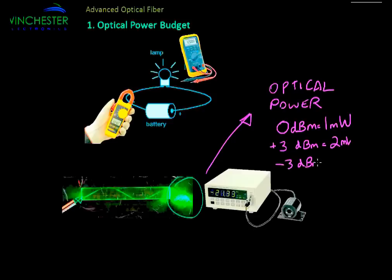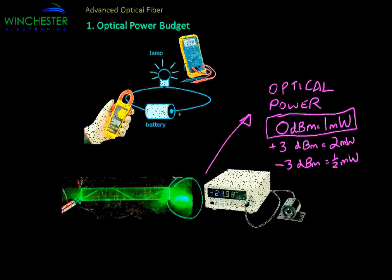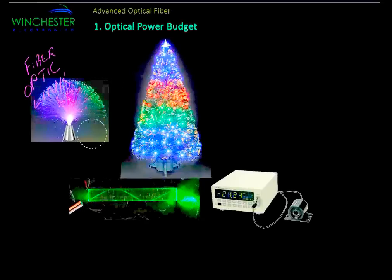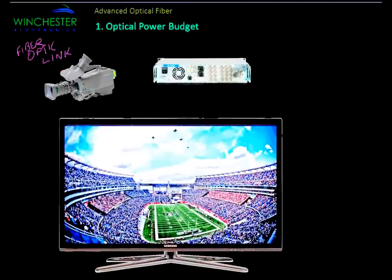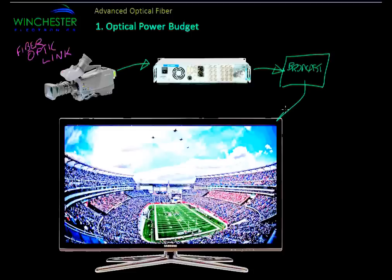All optical links have a transmitter at one end and a receiver at the other end. In the early days of fiber, many different types of products were developed — lamps, fiber optic Christmas trees, even fiber optic clothing. Nowadays we're really more interested in applications of fiber for transmitting data. One common application is broadcast video, where the signal comes in from an HD video camera, goes down a fiber optic link to the camera control unit, and eventually out to a TV set.